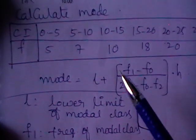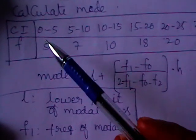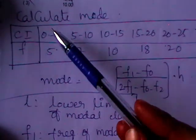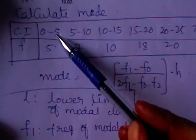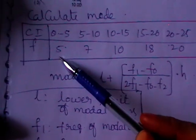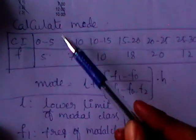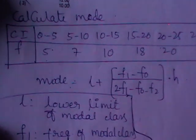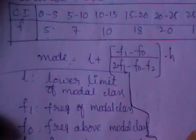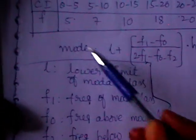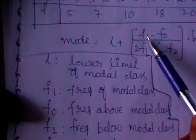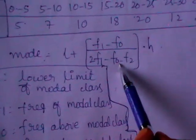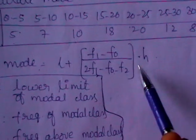To calculate mode for continuous series, if you observe the given data, it has two columns where the first column has lower and upper limits and frequency — clearly this comes under continuous series. Let us discuss the formula first, then we go to the solution. Mode is equal to L plus (F1 minus F0) divided by (2F1 minus F0 minus F2), into H.